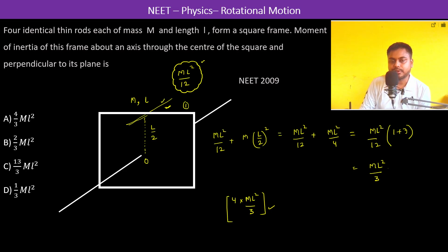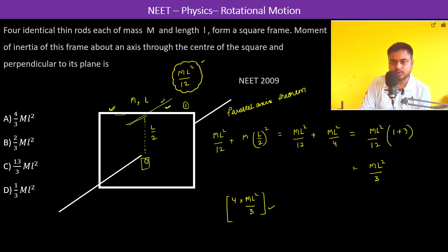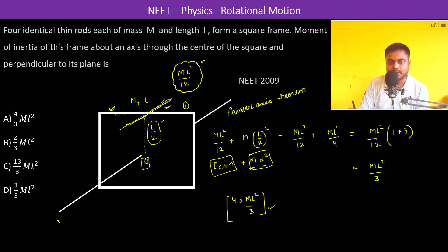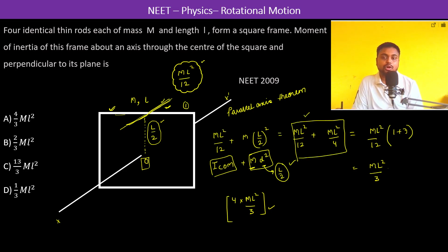What we used was the moment of inertia about an axis perpendicular to the rod — its perpendicular bisector. Then, to find the moment of inertia about point O, we applied the parallel axis theorem: I equals I center of mass plus M times D squared, where M is the total mass and D is the perpendicular distance between the two axes. Here D equals L by 2. Since this is identical for all four rods, we multiply by 4 to get the final answer.